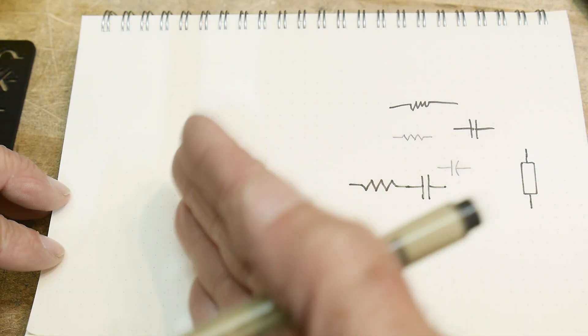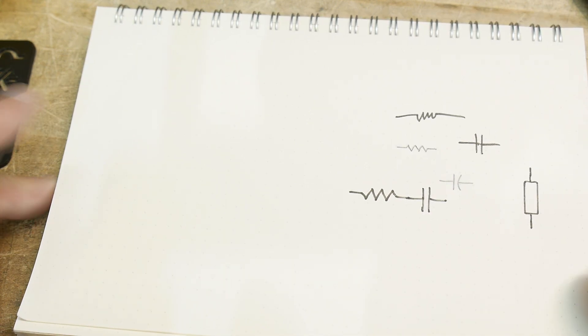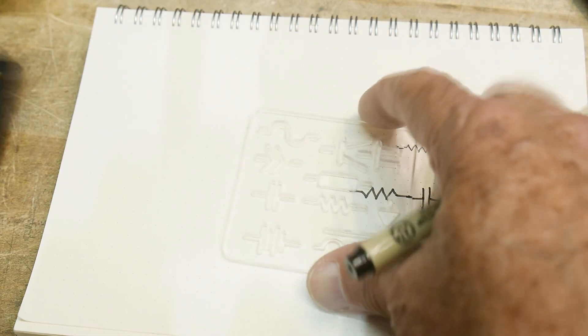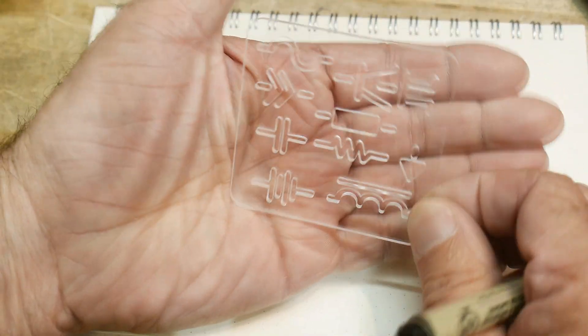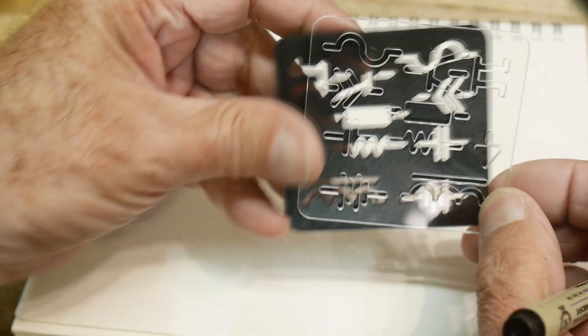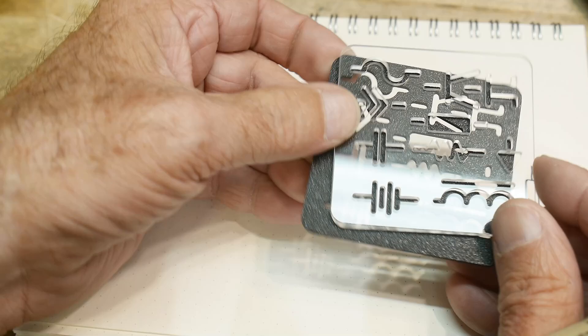And they have all kinds of different things that they can do for you, sheet metal and everything. So I sent in my drawing and I had them make a, it's kind of hard to see, isn't it? How do I photograph this? Anyway, it is the same thing. It's just a clear version of it, right? So now I can see through it.